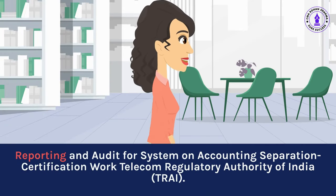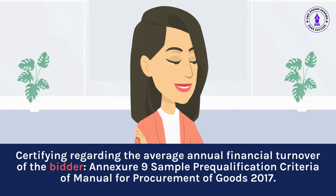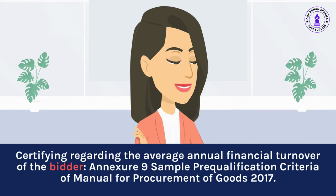Reporting and audit for the System on Accounting Separation Certification Work for the Telecom Regulatory Authority of India, TRAI. Certifying regarding the average annual financial turnover of the bidder as per the pre-qualification criteria of the Manual for Procurement of Goods, 2017.